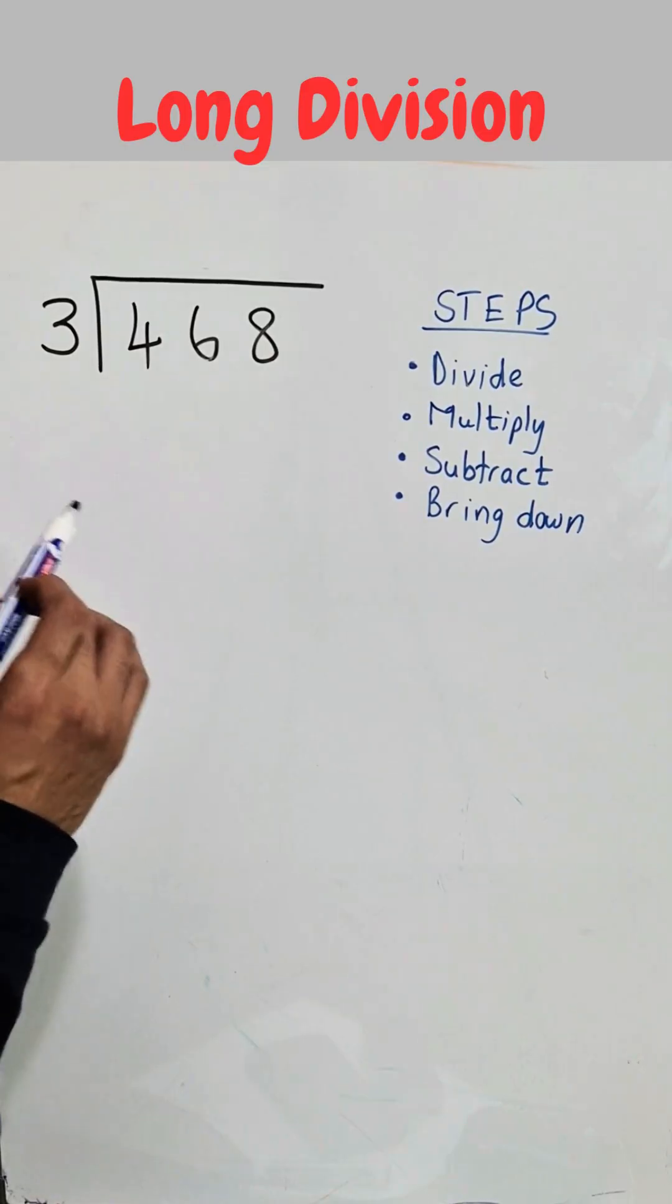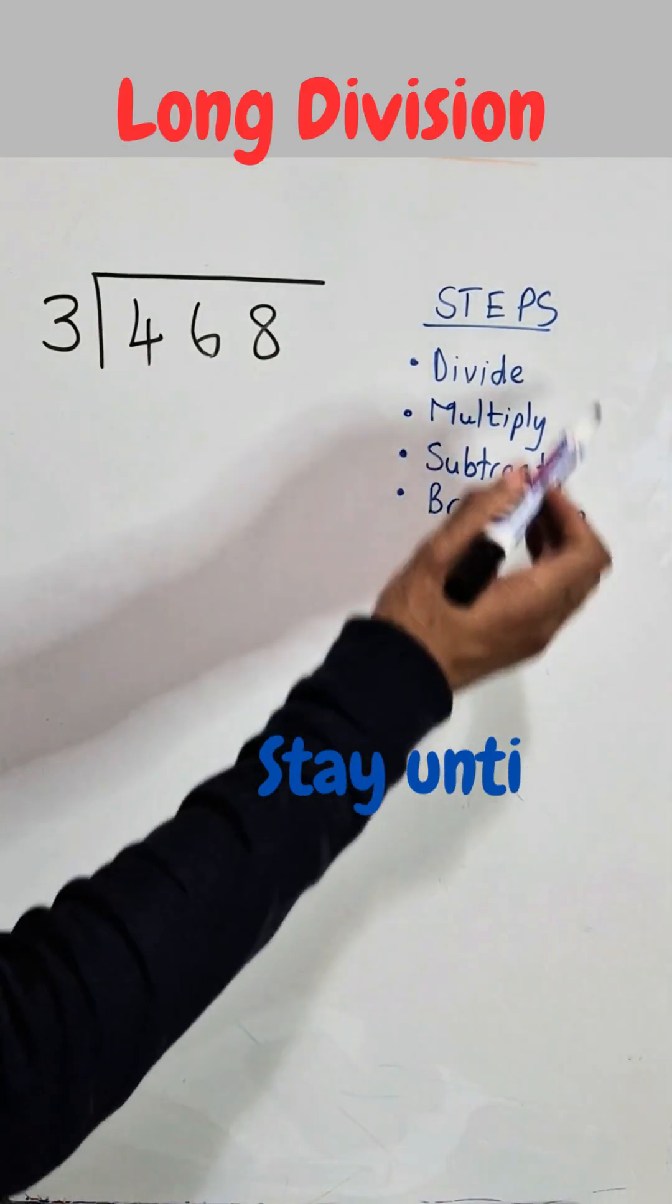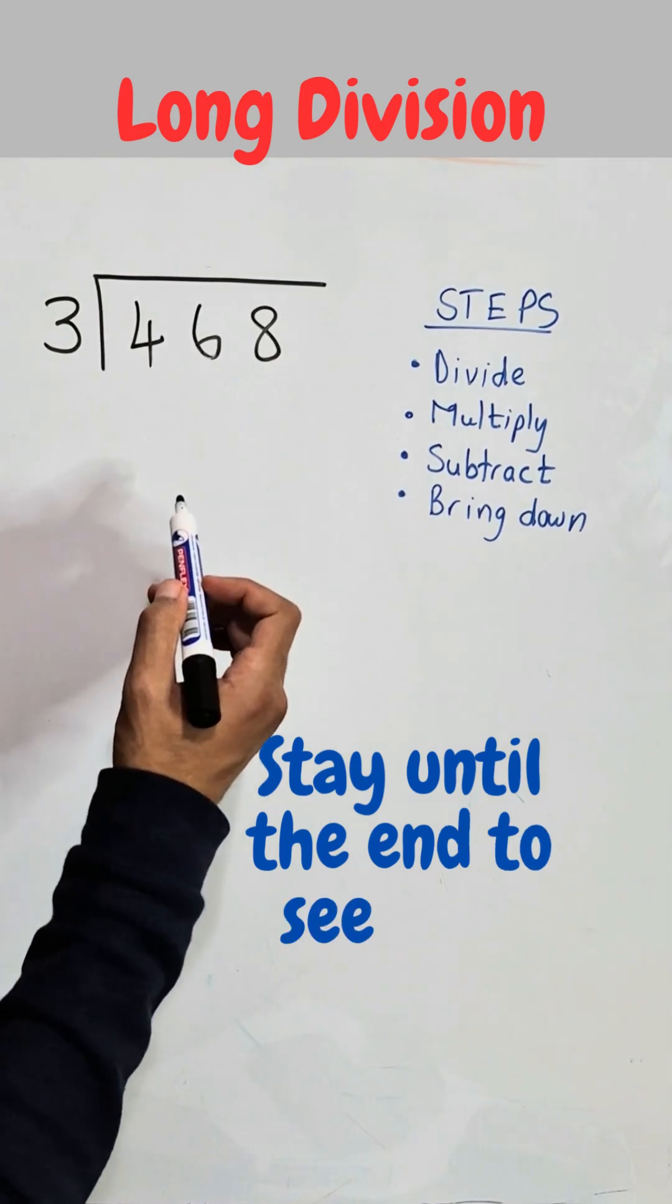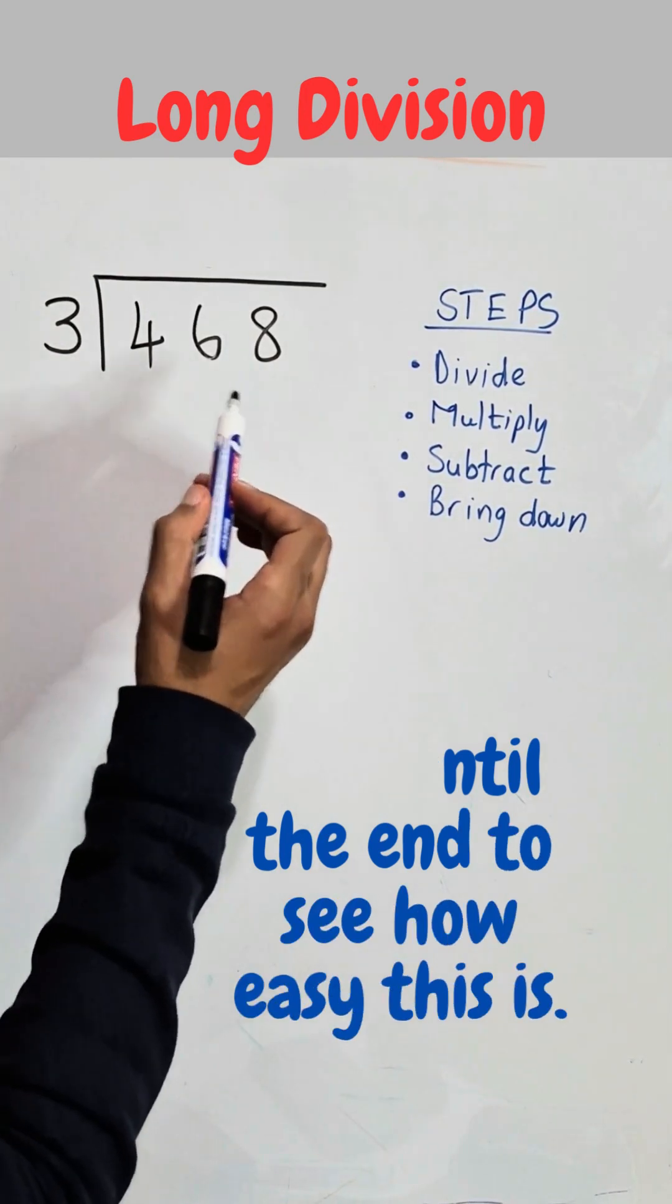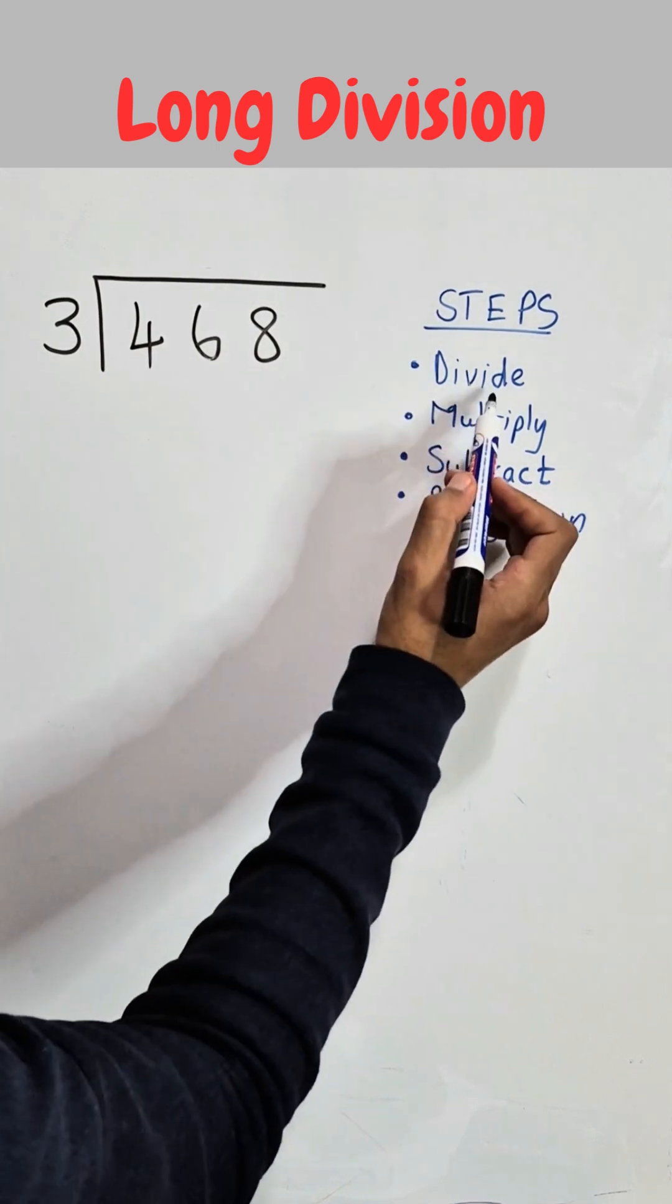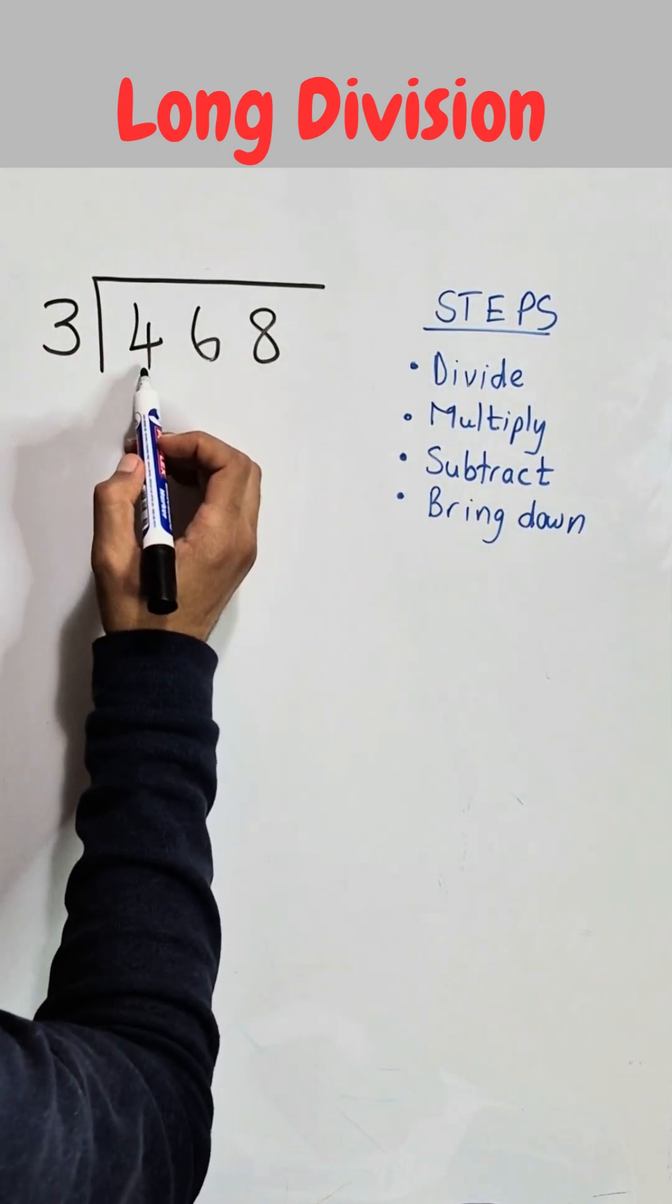So on the board we have a divisional sum and on the right hand side I have some steps to help us solve this divisional sum. For this example we have 468 divided by 3 and the first step is to divide 3 into the first number.